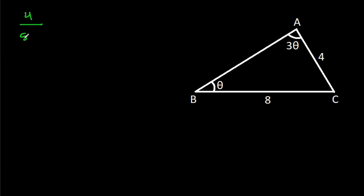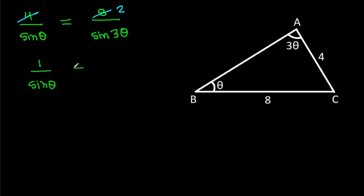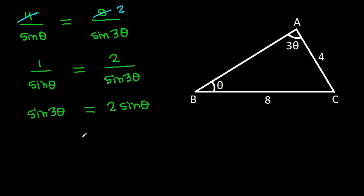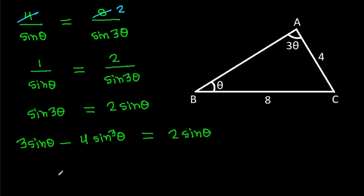Applying the sine rule to our triangle: 4 by sin theta equals 8 by sin 3 theta, since angle ABC is theta and angle BAC is 3 theta. Simplifying, we get sin 3 theta equals 2 sin theta. Using the identity sin 3 theta equals 3 sin theta minus 4 sin cubed theta, this becomes 3 sin theta minus 4 sin cubed theta equals 2 sin theta.